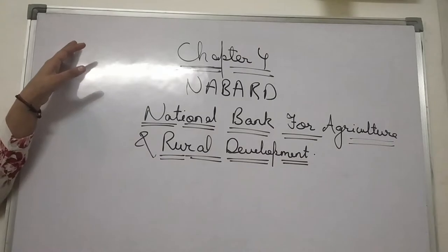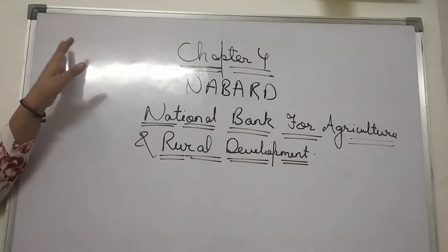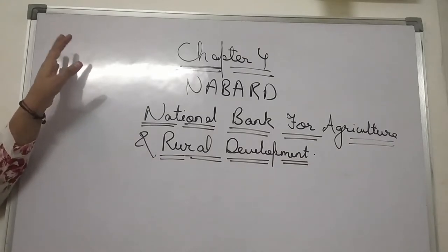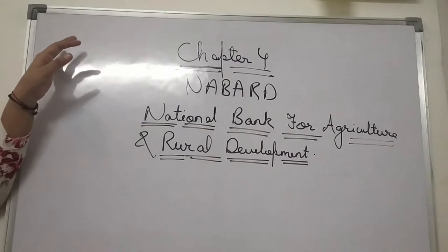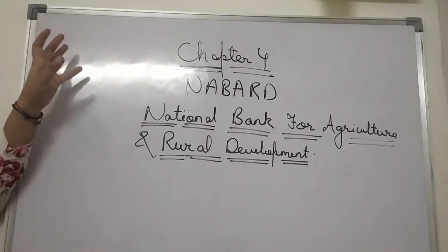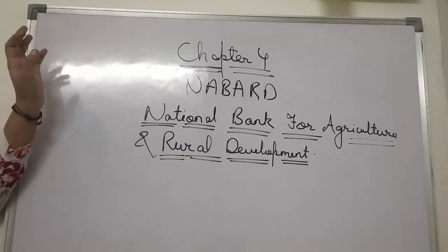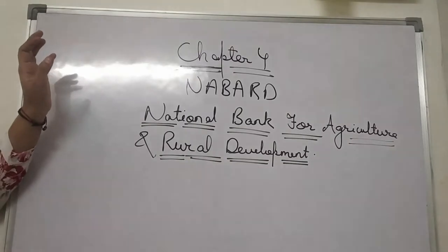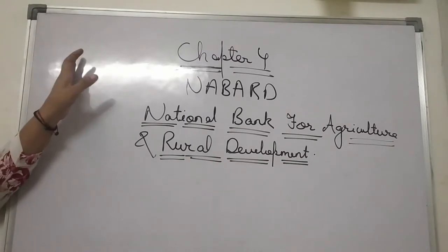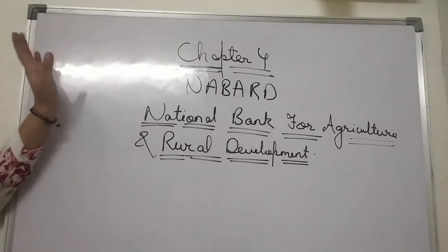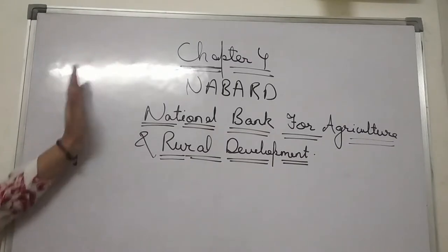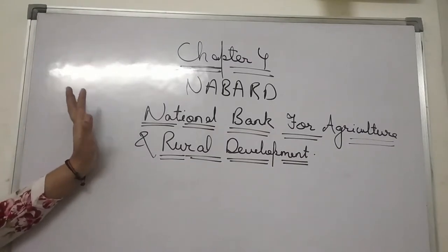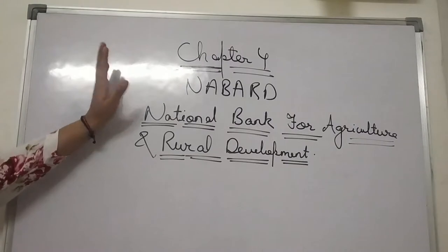In this chapter, we will cover the complete definition of a bank, commercial banks, private banks, public banks, and the two types of banks. We will also cover the Reserve Bank of India, its history, its Governor, and Chapter 4 on NABARD — what NABARD actually is.